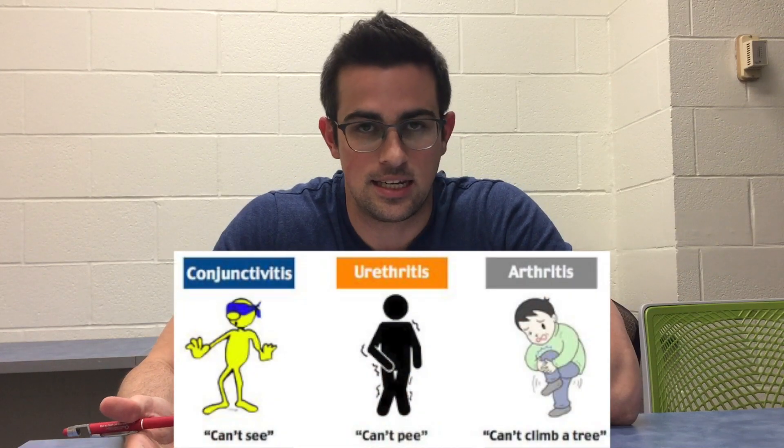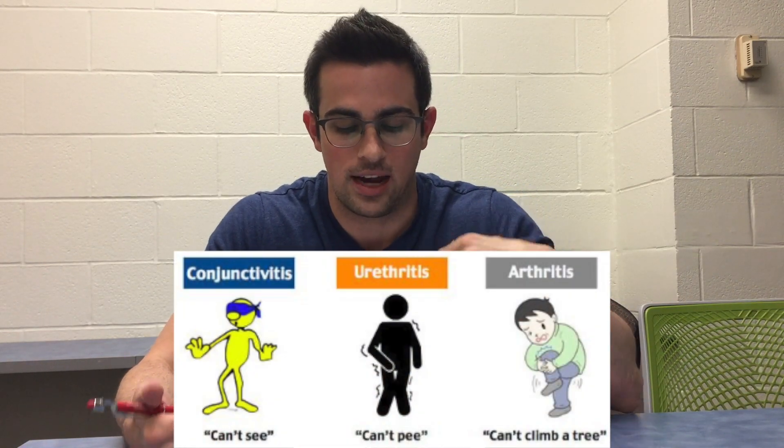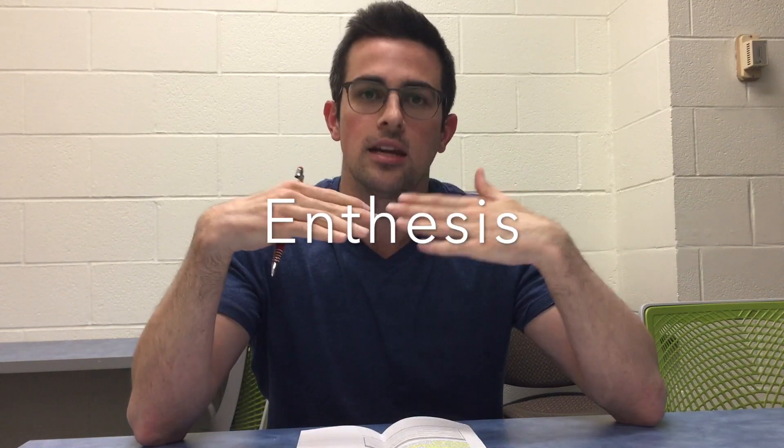In addition to monoarticular arthritis, you're going to see uveitis and conjunctivitis — giving us the classic mnemonic: can't see, can't pee, can't climb a tree. You're also going to get enthesitis, which is pain where the tendons insert, specifically known for plantar fasciitis or Achilles tendinopathy. If you have monoarticular arthritis with enthesitis — maybe Achilles involvement — reactive arthritis should be on your differential. You can also get a dactylitis picture, the so-called sausage fingers.